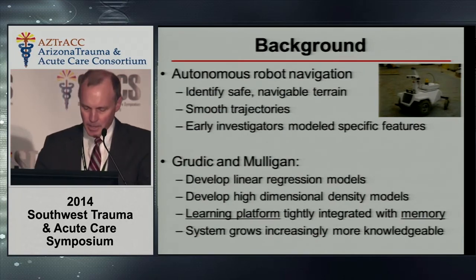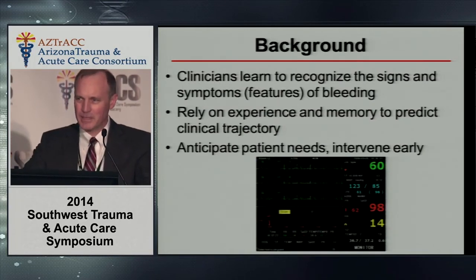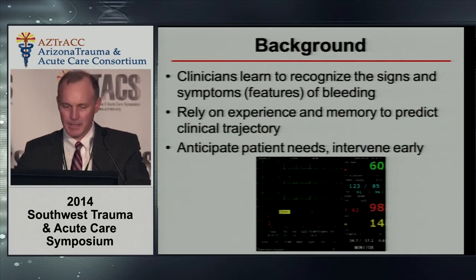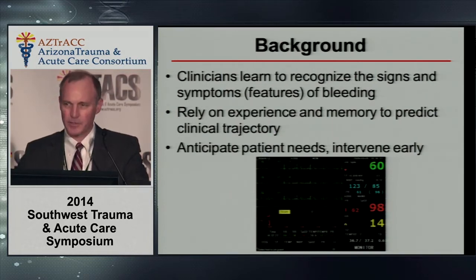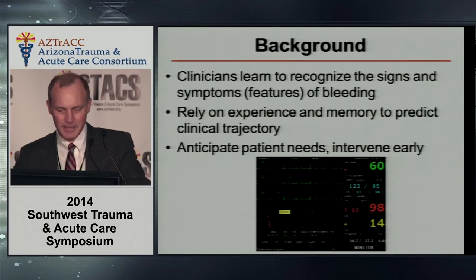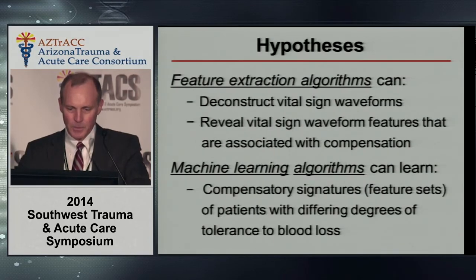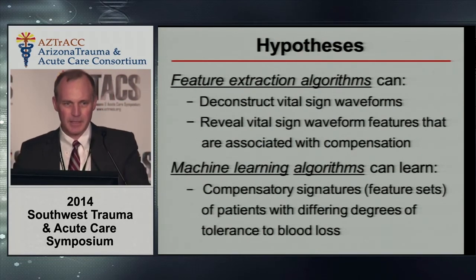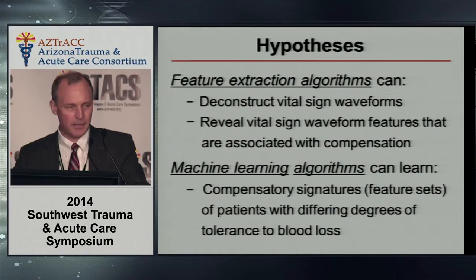Medicine is a lot like that, especially the monitoring of blood loss. We learn to recognize the features of our bleeding patients — the signs and symptoms — and we rely on experience and memory to predict the clinical trajectory of our patients. This way we can anticipate their needs and intervene early when the physiology is less complex and more likely to respond to therapy. So we hypothesized that the feature extraction algorithms Grudick and Mulligan developed for their robot could be applied to vital sign waveform data from a model of human blood loss, and that machine learning algorithms could learn compensatory feature sets to better identify bleeding patients.